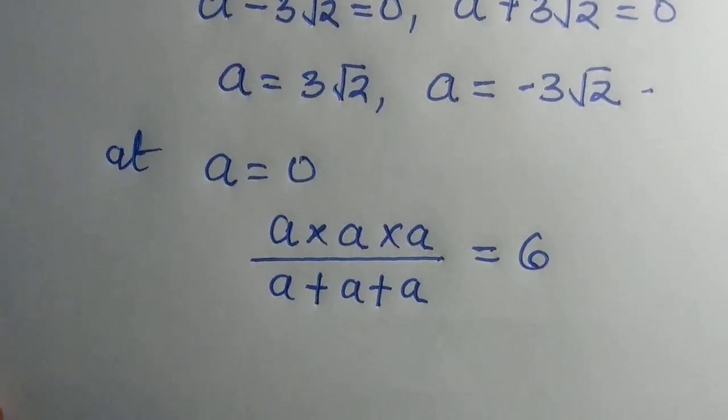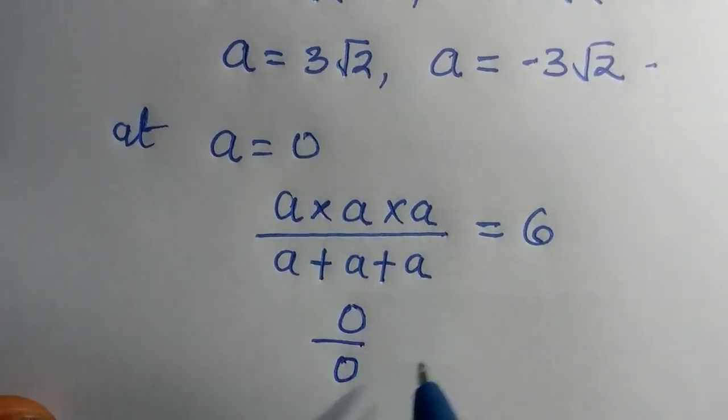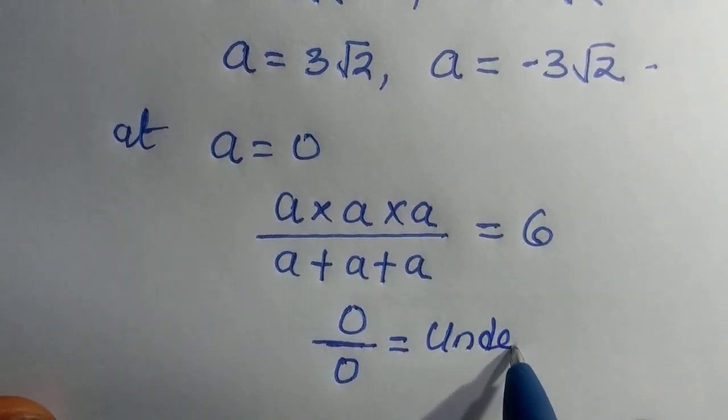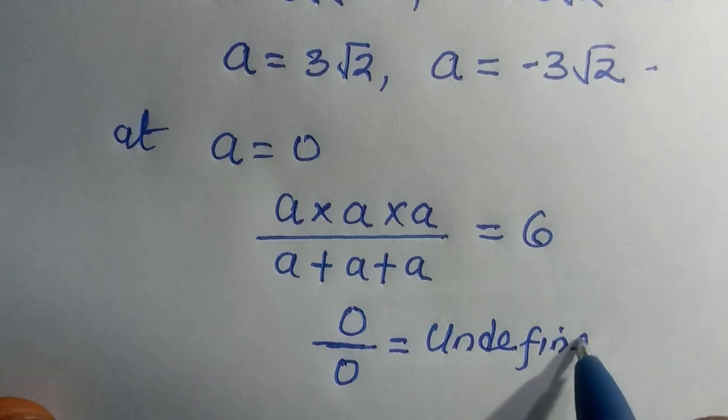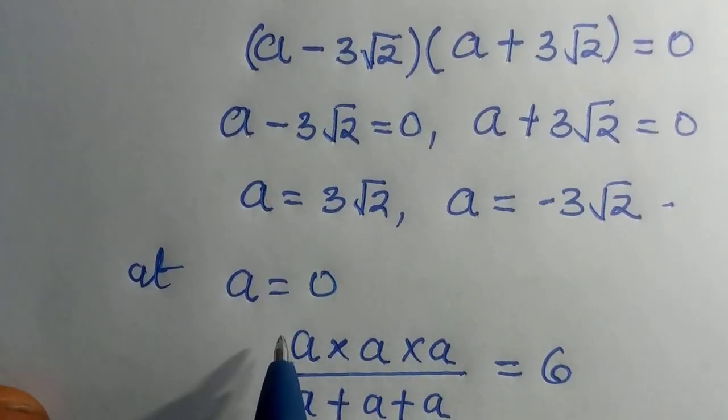When we substitute 0 as a value, so everything here becomes 0, and the delta also becomes 0. But 0 divided by 0 is undefined, so therefore, at a equals 0, it is a rejected value. So we reject it.